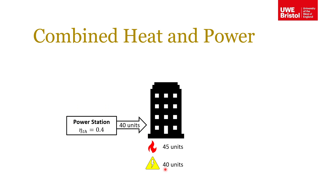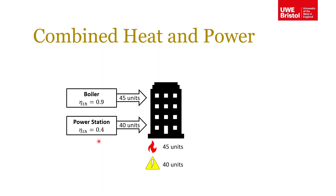Conventionally, the power supply to this building would come from the power station, giving us our 40 units of electricity. The thermal efficiency of a power station, as we know from thermodynamic cycle examples such as the Rankine cycle, is around 40 percent. We've also got a boiler supplying heat to the building, giving us our 45 units of thermal energy. Boilers tend to have higher thermal efficiency.